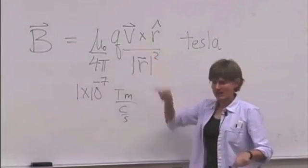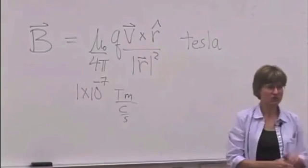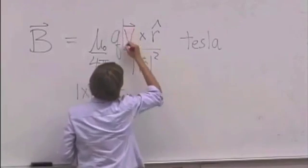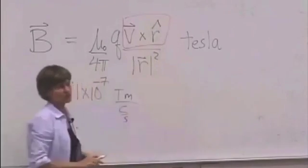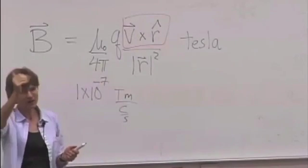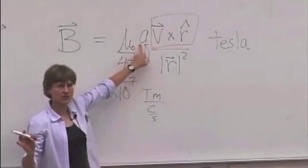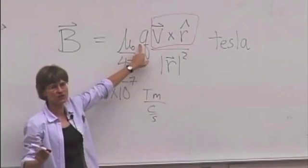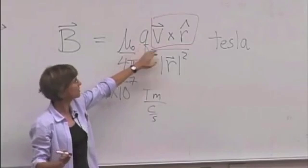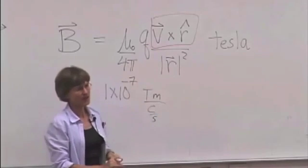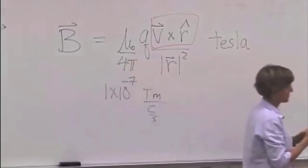You can get the direction. The key part for getting the direction, everything matters for the magnitude, but for the direction, the first thing you do is you do V cross R hat, right hand. And the second thing you do is say, what's the sign of the charge? If it's positive, it's in the direction of V cross R hat. If the charge is negative, I have to flip it. And that's basically all there is to it.